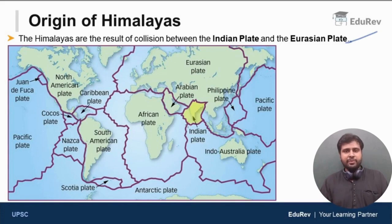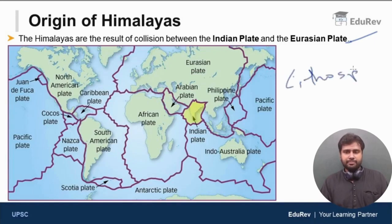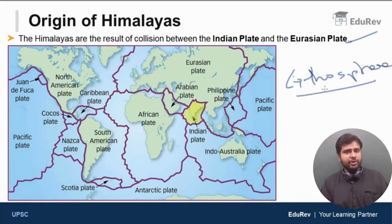This is the Indian plate which is highlighted and this is the Eurasian plate. What are these plates? The entire lithosphere of the earth is broken down into multiple tectonic plates.